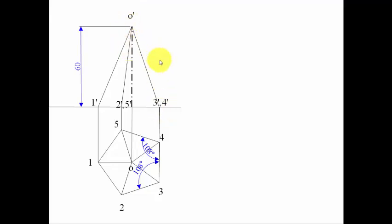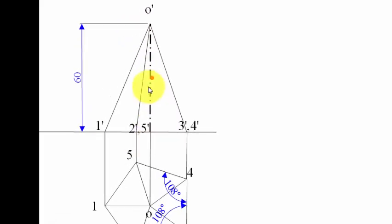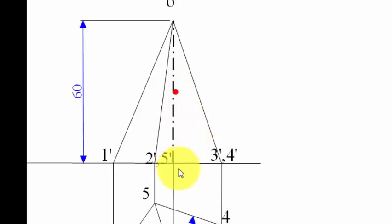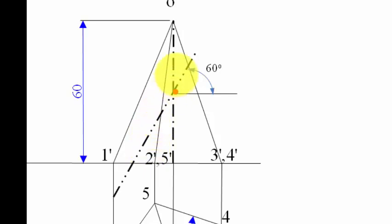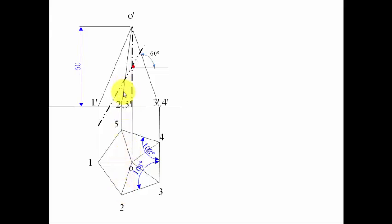The front view and top view are done. The next thing is to locate the cutting plane. The cutting plane bisects the axis, so it is at a height of 30mm. From this point, draw a horizontal line and then at an angle of 60 degrees draw the cutting plane line — using a dash-double-dot convention. This cutting plane intersects the pyramid at the base, on slant edge O2 at the front and O5 at the back, and also on slant edge O3 and O4, giving two intersection points — one at the front and one at the back.